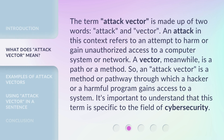The term 'Attack Vector' is made up of two words: Attack and Vector. An attack in this context refers to an attempt to harm or gain unauthorized access to a computer system or network. A vector, meanwhile, is a path or a method. So, an 'Attack Vector' is a method or pathway through which a hacker or a harmful program gains access to a system. It's important to understand that this term is specific to the field of cyber security.